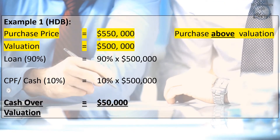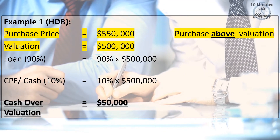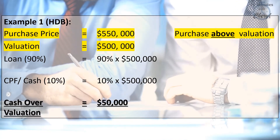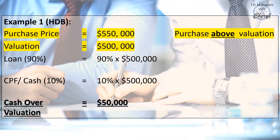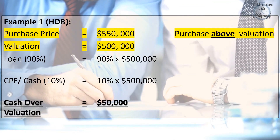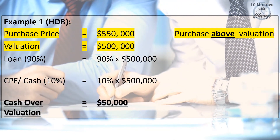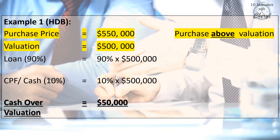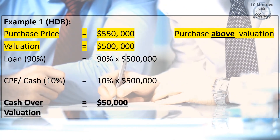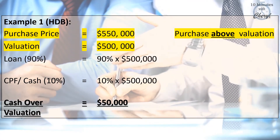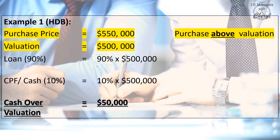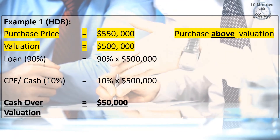In the first example, we look at the case of a HDB flat purchase. If the purchase price is $550,000 and the valuation is $500,000, assuming the buyer took a HDB loan and secured up to 90% loan, this 90% will be based on valuation or purchase price, whichever is lower — in this case, $500,000. If this buyer uses CPF to cover the other 10%, the purchaser will need to pay the shortfall of $50,000 in cash, since it is neither covered by loan nor CPF. We call this cash over valuation.